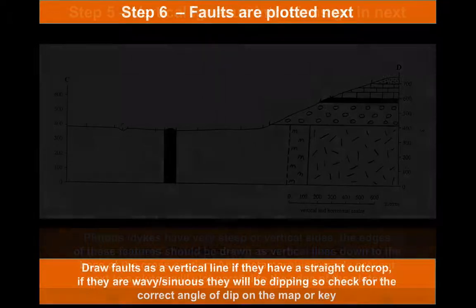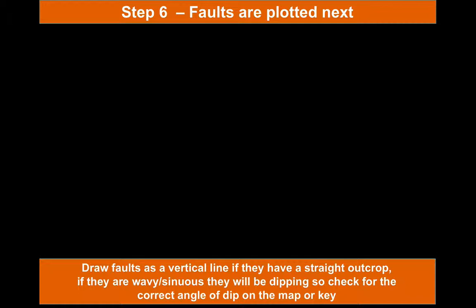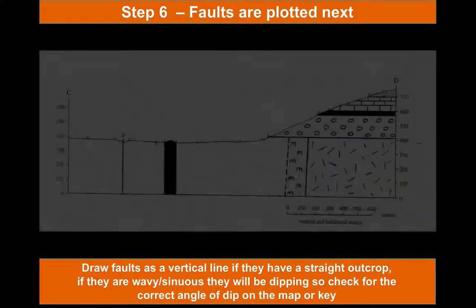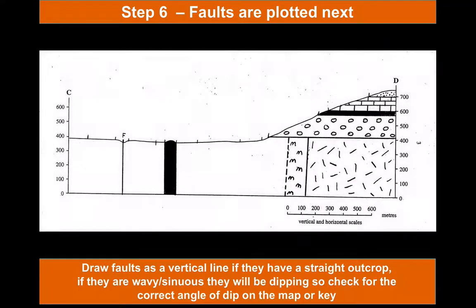Our next step is to plot in any faults. Faults break beds, so before we plot beds in we need to plot the faults that cut through them. If they are a straight line on your map, it's very easy — we draw a vertical line. If they're not straight and they're dipping, usually there's been a question about those faults telling you how much they dip, so make sure you pick up on those clues. Here, labelled F, we've got the fault — because the fault on this map is vertical.